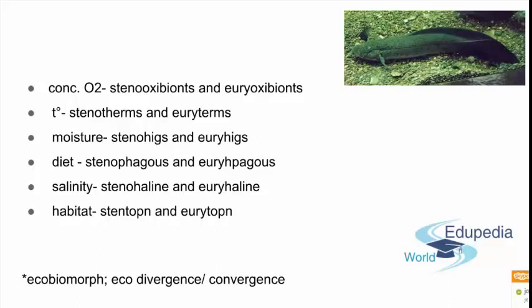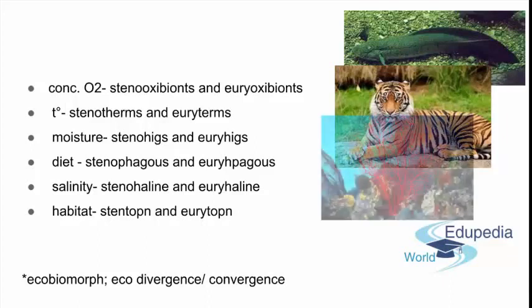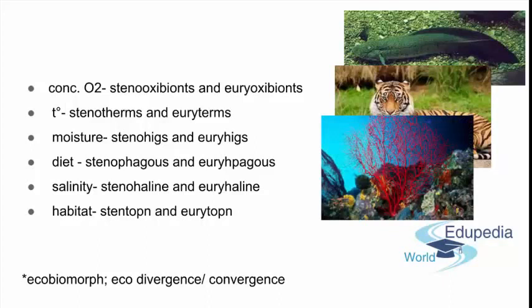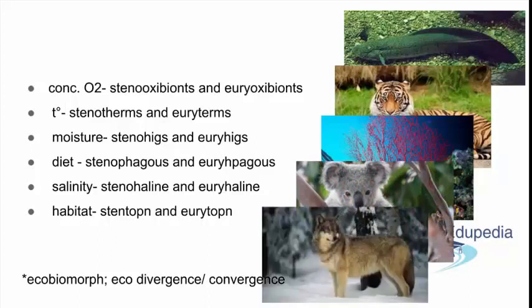Dipnoa, as a species, are really eury-oxibionts. The tiger is a eury-therm — you have tigers living in Russia in the complete north and then a species of tigers living in India. Corals are really temperature-dependent, so they are really stenotherms — they don't appreciate a huge change in temperature, as you know from the talk about global warming and the Great Barrier Reef in Australia. Koalas are really strict on diet — each species eats only eucalyptus. Wolves are habitat cosmopolitans — you can find them basically everywhere in the world.